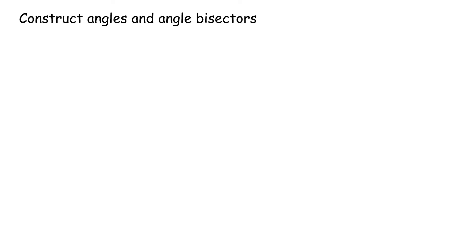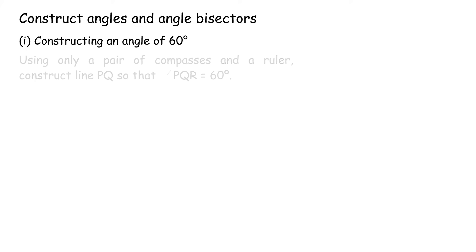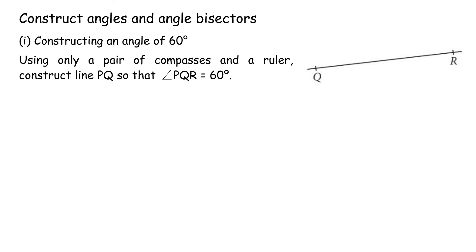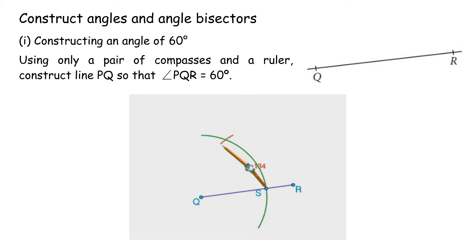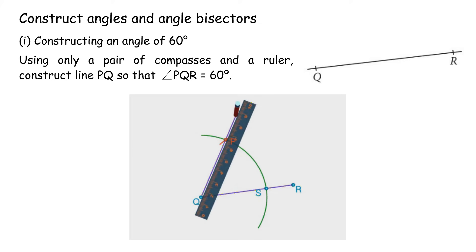Construct angles and angle bisectors. 1. Constructing an angle of 60 degrees. Using only a pair of compasses and a ruler, construct line PQ so that angle PQR equals 60 degrees. 1. Construct a long arc from Q intersecting QR; mark the point of intersection as S. 2. Keeping the same distance on the compasses, construct an arc from S intersecting the arc constructed; mark the point of intersection as P. 3. Draw a line joining point P and Q. Thus, angle PQR equals 60 degrees.